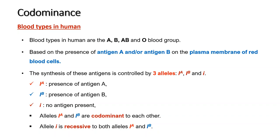Another example of co-dominance is blood types in humans. The human blood groups are A, B, AB, and O, based on the presence or absence of antigens on the plasma membrane of red blood cells. The blood cell antigen is coded by the gene isohemaglutinogen, represented by the letter I. There are 3 alleles: IA for presence of antigen A, IB for presence of antigen B, and I where no antigen is present. IA and IB are co-dominant to each other, with allele I being recessive to both IA and IB.